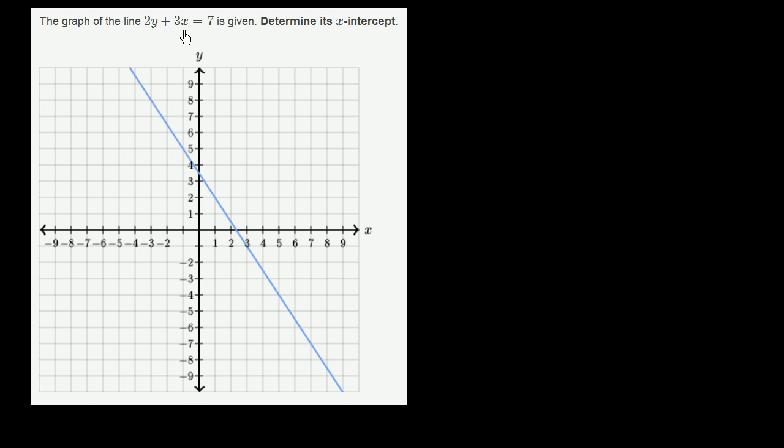The graph of the line 2y plus 3x equals 7 is given, right over here. Determine its x-intercept.